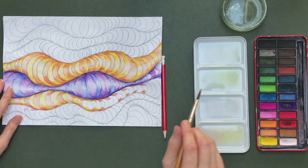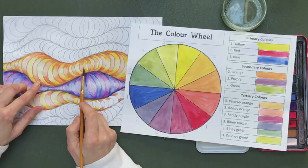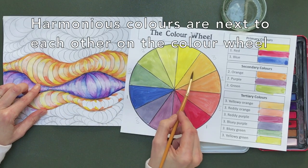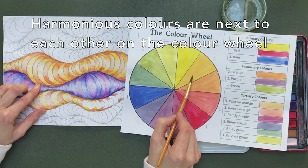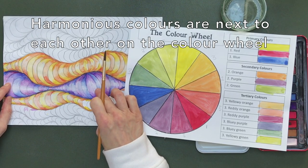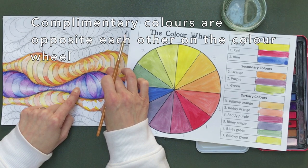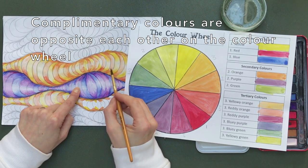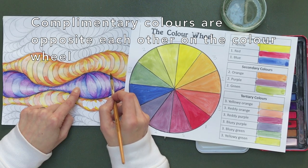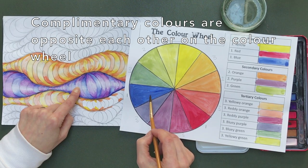Then if you have a look at your colour wheel that we painted before, I would like your stripes to be harmonious colours. Harmonious colours are the colours next to each other on the colour wheel, and then the column next door I'd like you to paint as the complementary colours of these stripes. So for example this is an orange stripe here — if you look on the colour wheel, where have we got orange, the complementary of orange is blue.